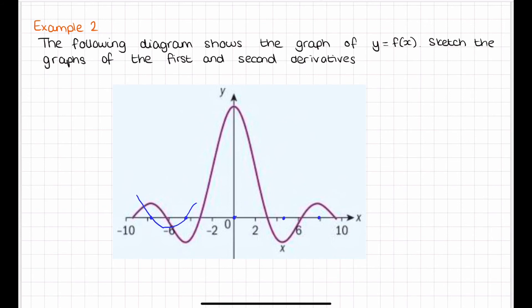Looking at the really high turning point: the gradient is positive going up to that point, so our graph needs to stay above the x-axis until it reaches that point. Then it decreases after, down to the next minimum, so the line needs to be drawn below the x-axis because it's a negative gradient. We do that for the rest and end up with the first derivative graph.